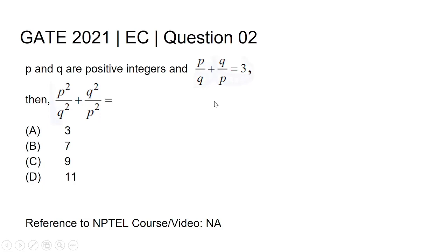Hi all, this is GATE 2021 Electronics and Communication Engineering Question Number 2. The question is: p and q are positive integers and p/q + q/p = 3. Then p²/q² + q²/p² = ?